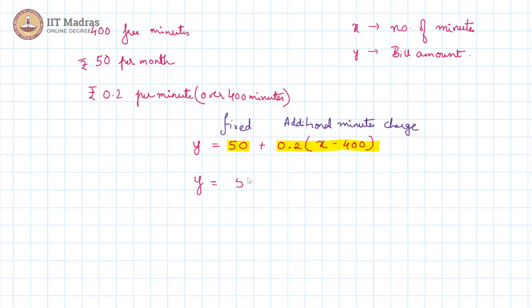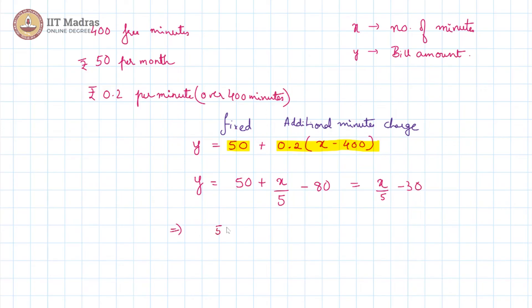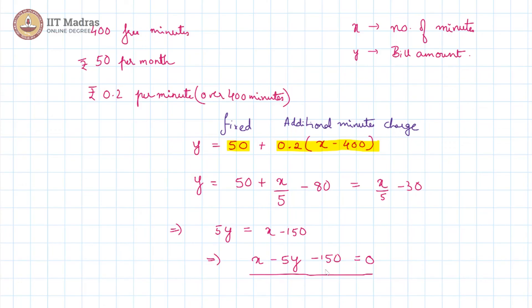We get a linear equation which is y = 50 + (x − 400) × 0.2, which simplifies to y = x/5 − 30. This is the equation that relates our bill amount to the number of minutes.